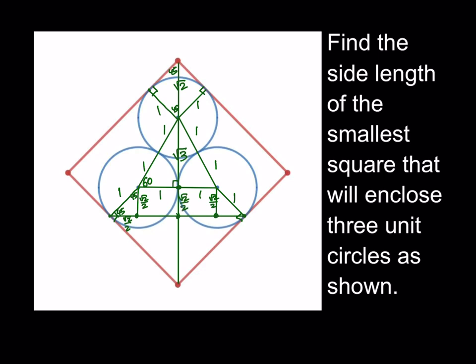Cool. So pretty much I found everything except for this guy here between these two points. How am I going to find that? Well, notice that this is 1, and this is 1 plus root 2 over 2, and this is also a 45-45-90 triangle. Therefore, this height here or length, whatever you want to call that, is also going to be root 2 over 2 plus 1. Awesome. So we were able to find all the lengths that we need. So this means that we are ready to find the side length of the small square that encloses 3 unit circles. Alright. So let's go ahead and proceed.